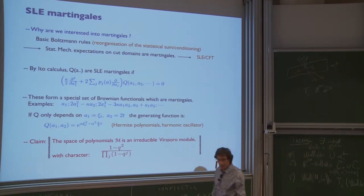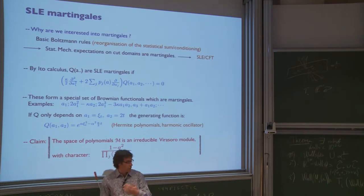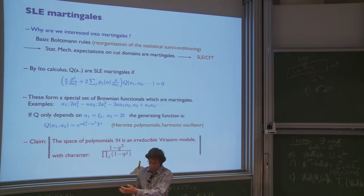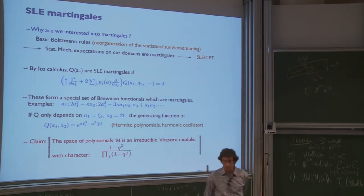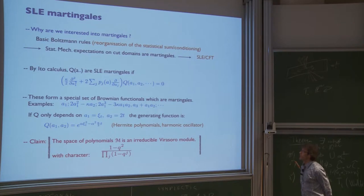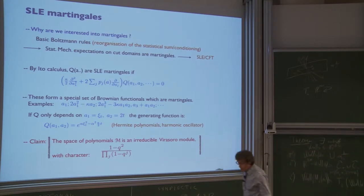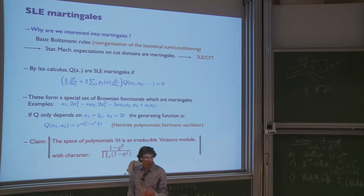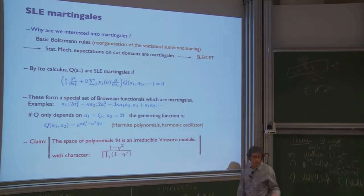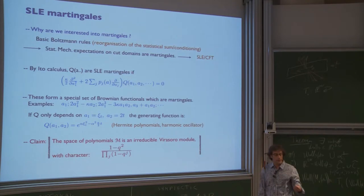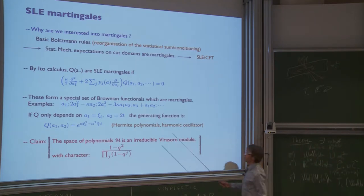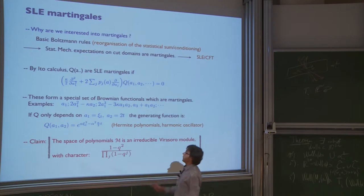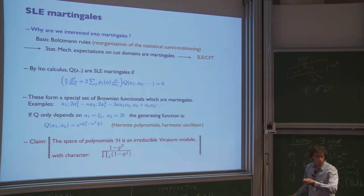This is how you make contact between SLE and the corresponding field theory — the conformal field theory associated to the statistical model. That was the motivation for looking at martingales, but now we forget about martingales and just look at algebraic properties. If you ask for a polynomial q to be a martingale, you have to ask that the time derivative of its mean is 0. This leads to a second-order differential equation, and this second-order differential operator is linked to the operator associated with the stochastic process which generates the curve. Every time you have a Markov process, you have second-order differential operators.